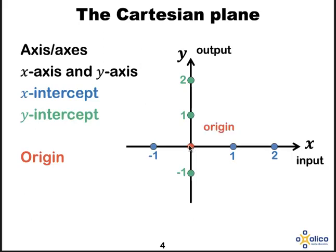The origin or this point where your x-axis and your y-axis intersects is where x is 0 and y is 0 and we write that as a coordinate saying the input or x value is 0 and the output or y value is also 0.